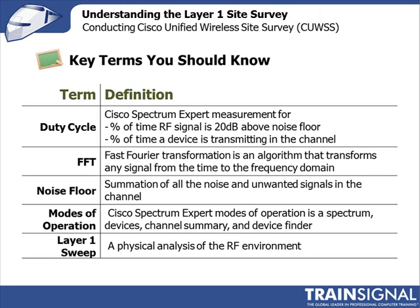The noise floor is a summation of all the noise — electrical, mechanical, and unwanted signals in that band. Modes of operation is a term specific to the Cisco Spectrum Expert and refers to the five different tabs: two spectrum tabs, the devices tab, the channel summary, and the device finder. A layer one sweep is literally a sweep across the RF environment — sweeping across the 2.4 GHz and 5 GHz bands to observe signal strength levels.